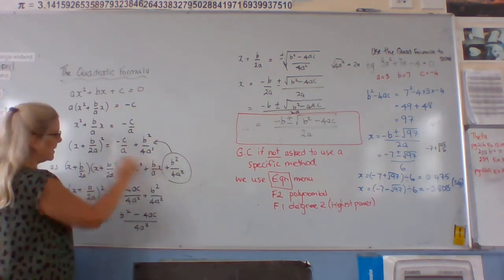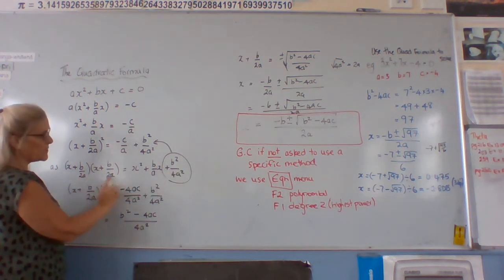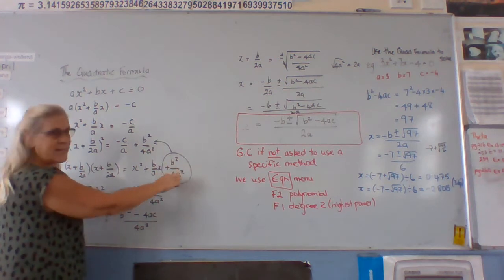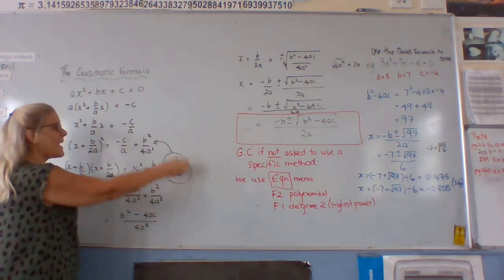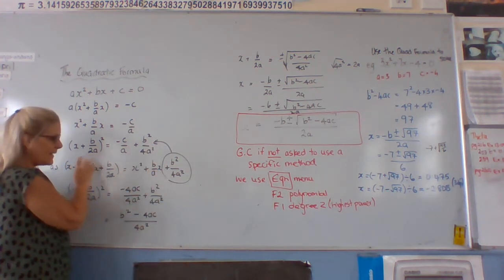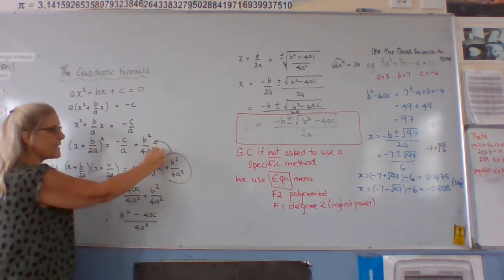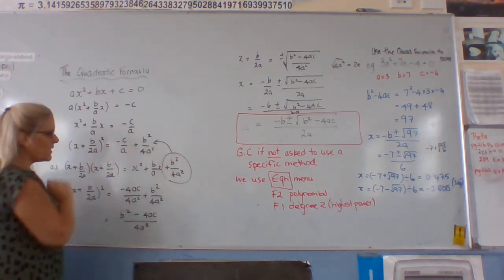And this times this, b times b is b squared, 2 times 2 is 4, a times a is a squared. So we've got this extra bit. So we need to add it to both sides. It's already in here from this, so we need to add it to this side. So now that we've got that.